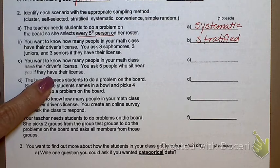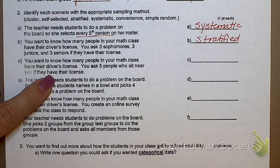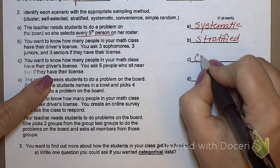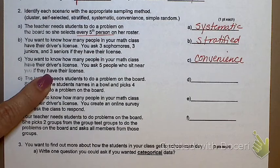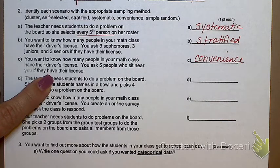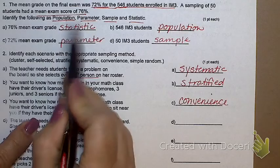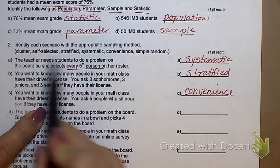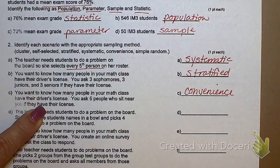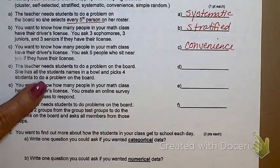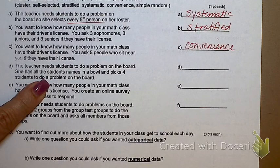You want to know how many people in your math class have their driver's license, so you ask five people who sit near you if they have their license. What is that one? Convenience. Those are the people closest to you. By the way, should we have any spelling issues tomorrow? I hate talking about this, but the words are spelled out there for you, so I shouldn't have to wonder what you're writing. Wink, wink, nudge, nudge for some of you that your brains move faster than your hands.